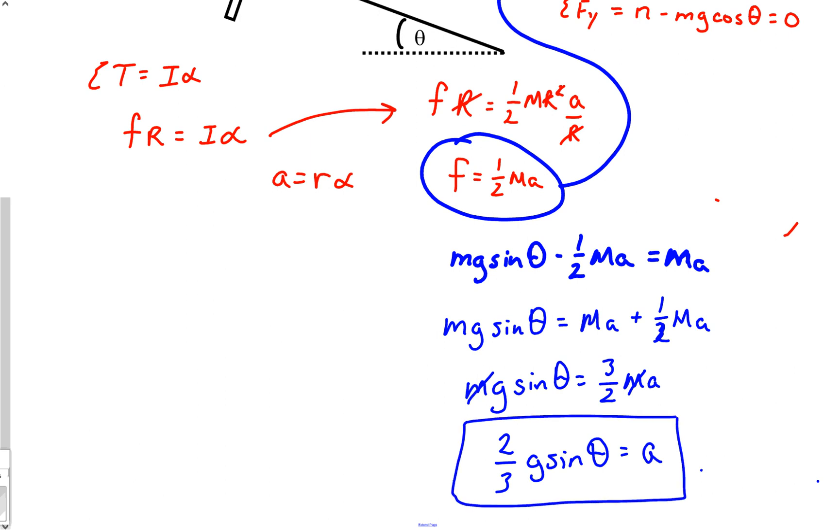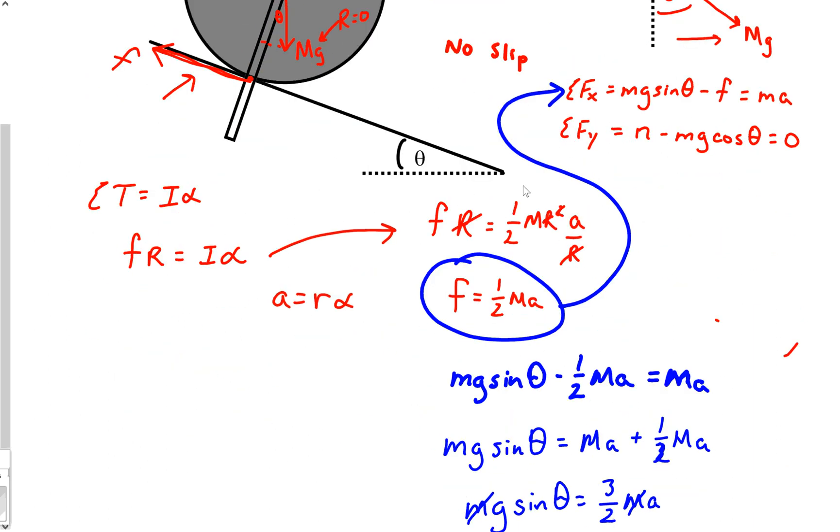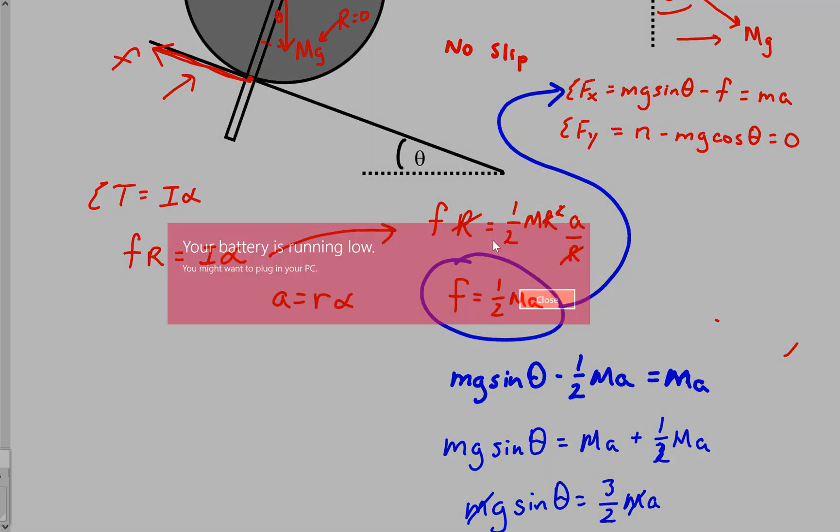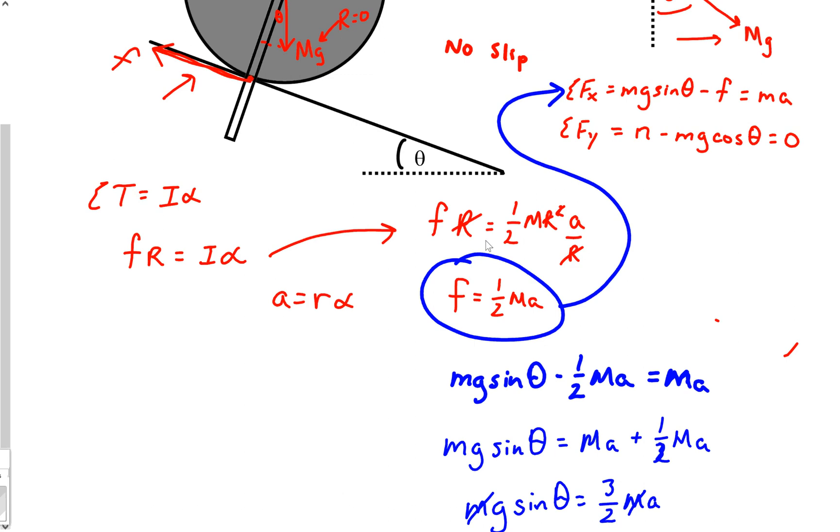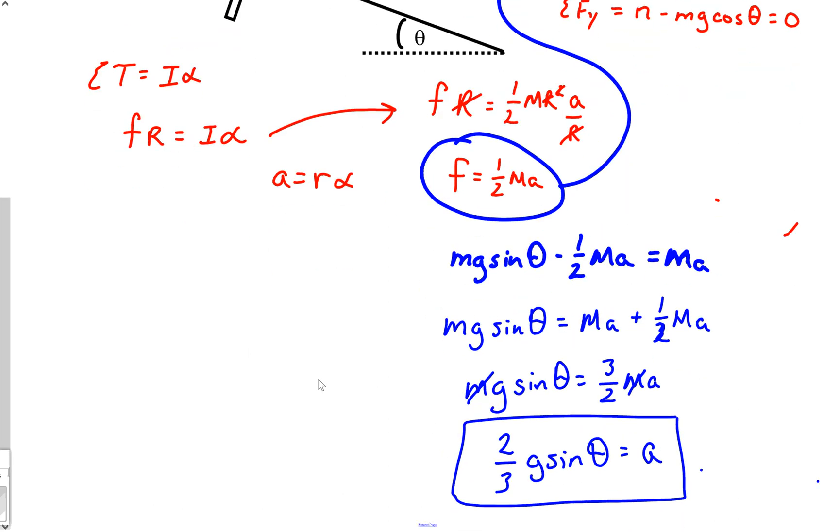And again, a very common question that goes with a problem like this would be what if you used a hoop? The only difference is if we use a hoop, this one-half would have never showed up. And my battery is running low, so that's where this video is going to end. Anyway, I hope this helps and gets you started a little further on your path. We'll see you later.